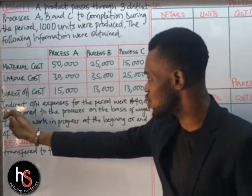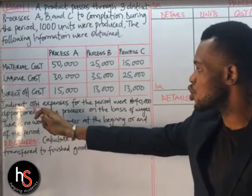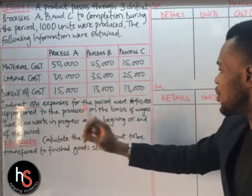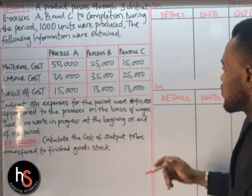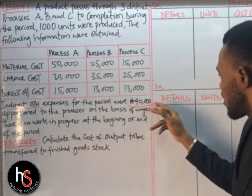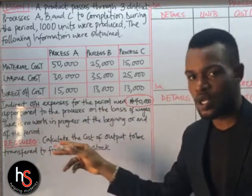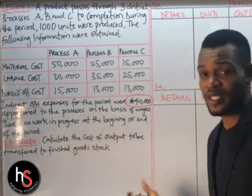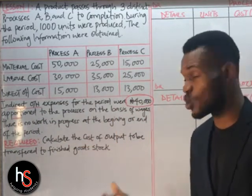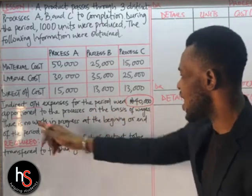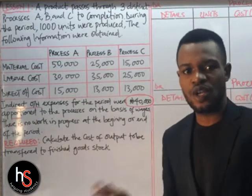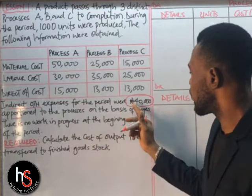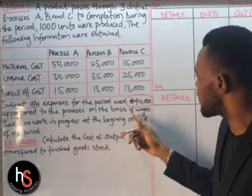Take note: we are also going to solve for indirect overhead for process A, B, and C. They told us the indirect overhead expenses for the period were 40,000 Naira, apportioned. The moment you see the word 'apportioned,' it means this 40,000 Naira will be distributed through the different processes. Now, 40,000 Naira apportioned — we need to know where. Continuing to read: the 40,000 Naira is apportioned to the processes on the basis of wages.